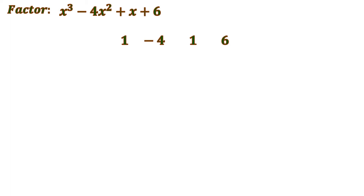I'm going to plot all the numerical coefficients: 1 for x cubed, negative 4 for x squared, 1 for x, and the constant 6. Then we put a line and a box where we place the number that will divide this polynomial expression. This requires patience because you have to keep trying different numbers until you get a remainder of 0.